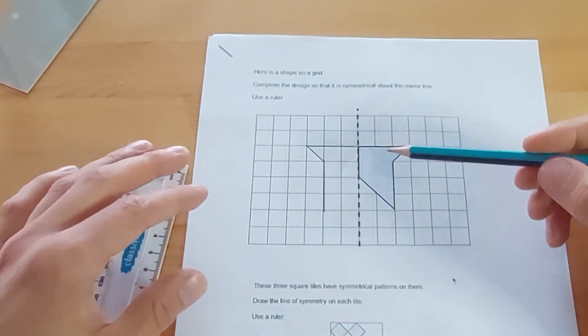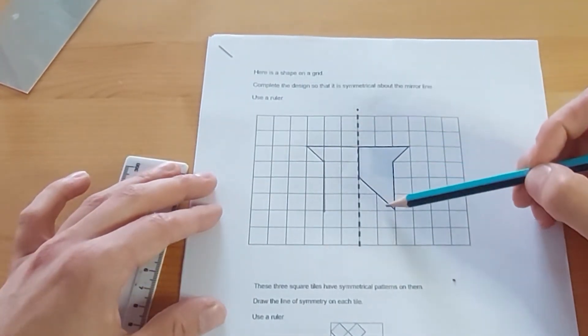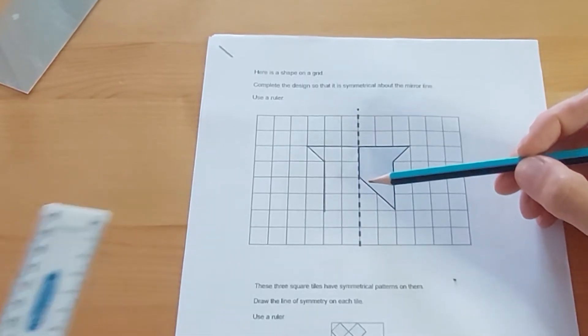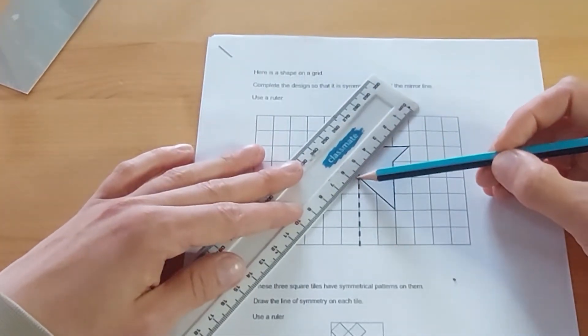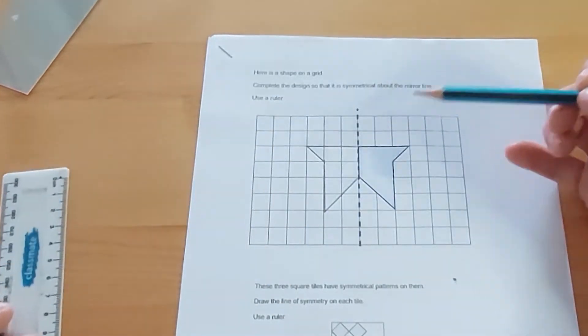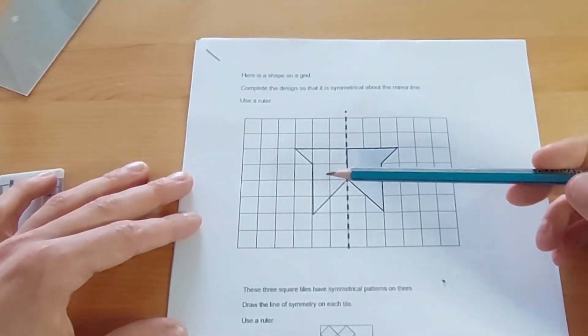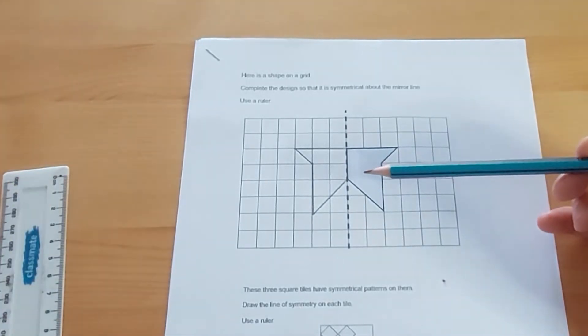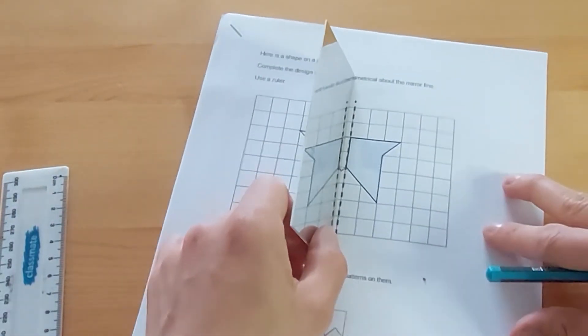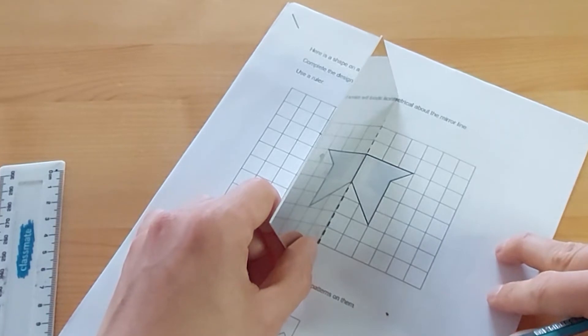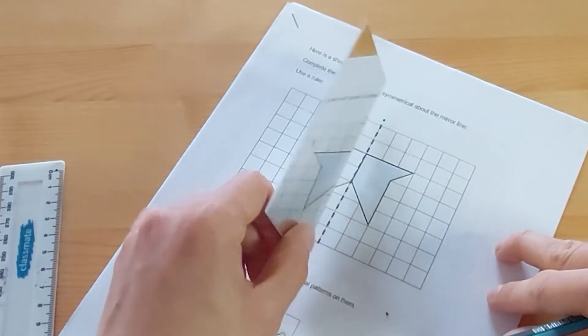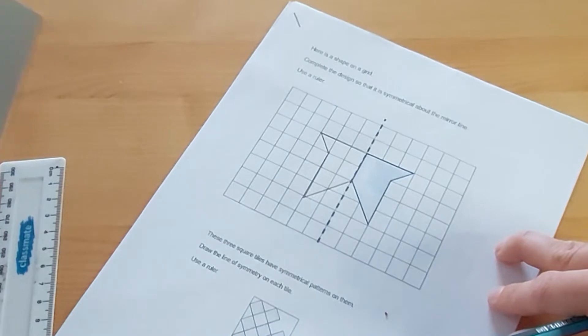And now what happens now is it's going to go from here back up to there. So I'm going to go from there back up to there and then if you just take off your ruler it should be that both sides now are symmetrical. This side should look exactly the same to this side and if I put my mirror line here on the side and I check it, am I happy with that? Does it look the same? Yes it does.